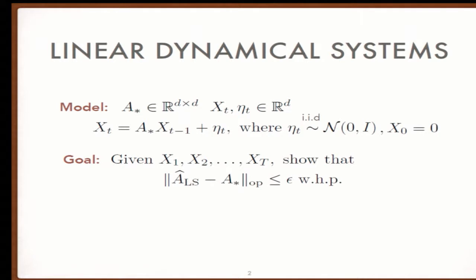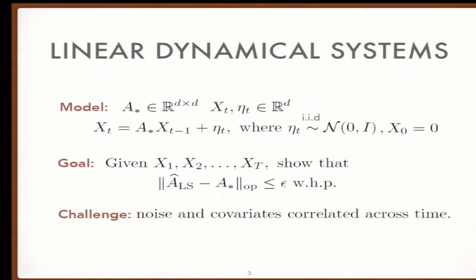There are two main challenges. First, the noise and covariates are correlated across time. Even though the noise sequence is IID, this process introduces serial correlation. Second, A may not be symmetric or even diagonalizable, which is important in the control community.